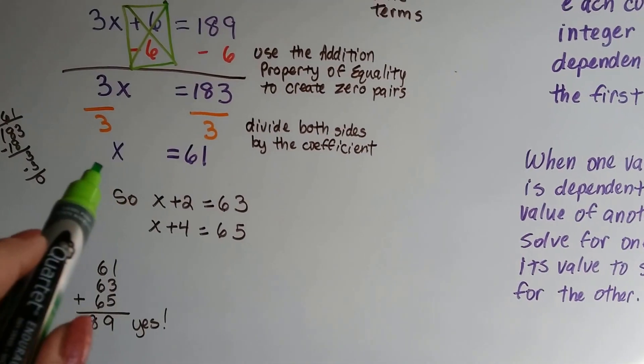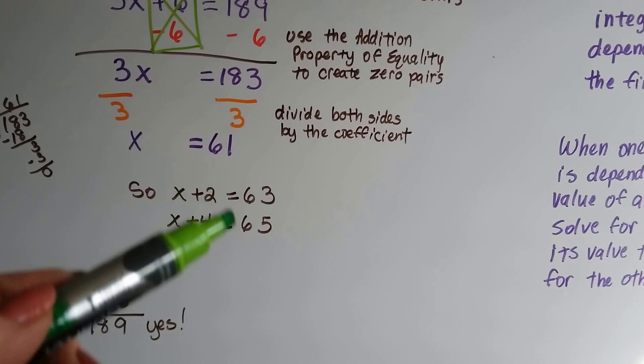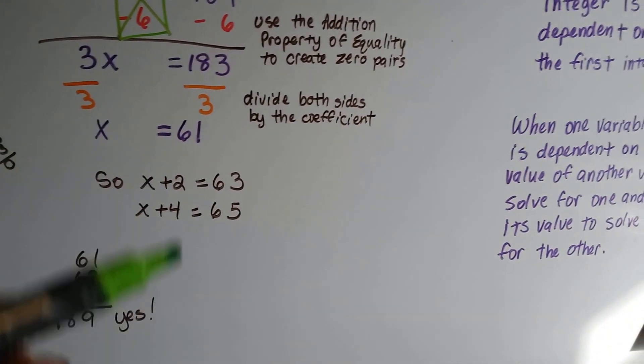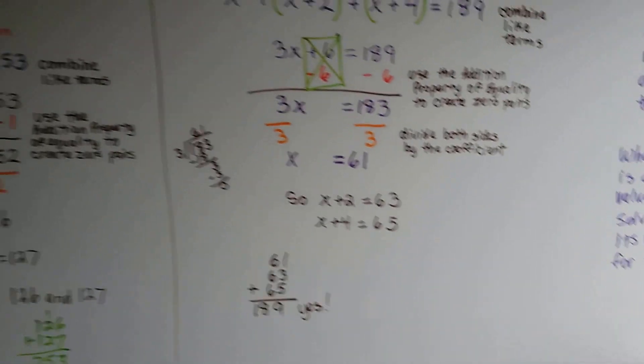Just like we did here. We found out that this one was 61. And that helped us find these, didn't it? These were dependent on that one. See? Dependent variables.